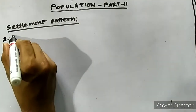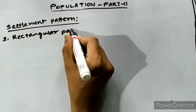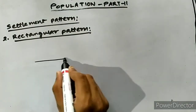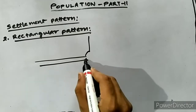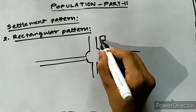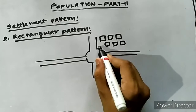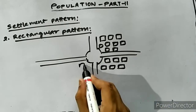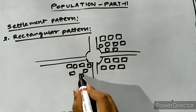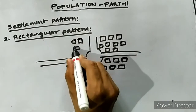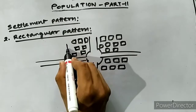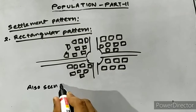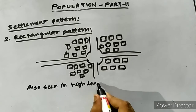The next important settlement pattern is the rectangular settlement. In this settlement, homesteads are arranged in such a manner that the village appears to be rectangular. Such settlements are seen in thickly populated areas of the Brahmaputra and Barak valleys, where a lesser area accommodates a greater number of population. This is why Karimganj, Cachar, Nagaon, Nalbari, and Dhubri have these types of settlements.